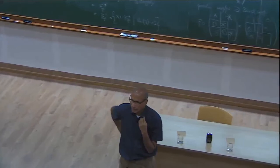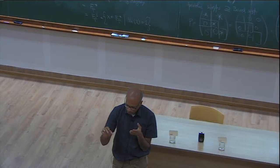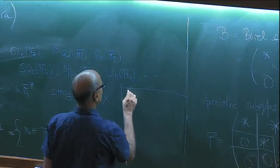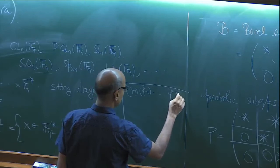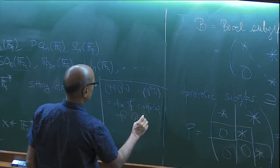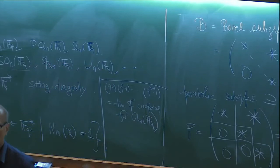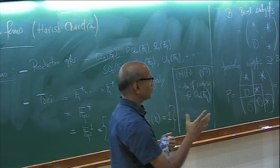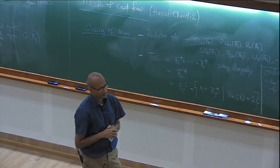For GL2 the dimension of cuspidal representations is q−1. For GL_n it is (q−1)(q²−1)···(q^{n−1}−1). So the dimension of the cuspidal representation for GL_n(Fq) equals (q−1)(q²−1)···(q^{n−1}−1). They are parameterized by characters on Fq^n*. One knows how many there are and which characters give rise to irreducible ones. In some sense, for GL_n the theory is well understood: most questions that people can ask have good and simple answers.